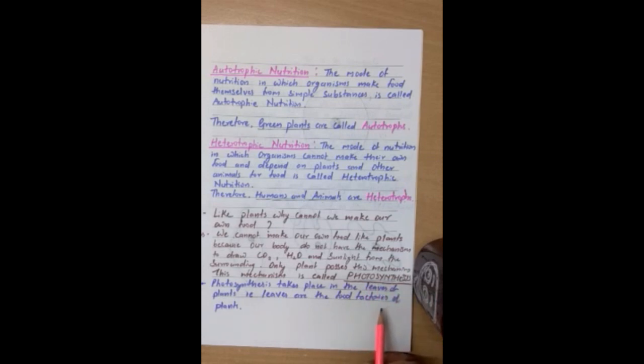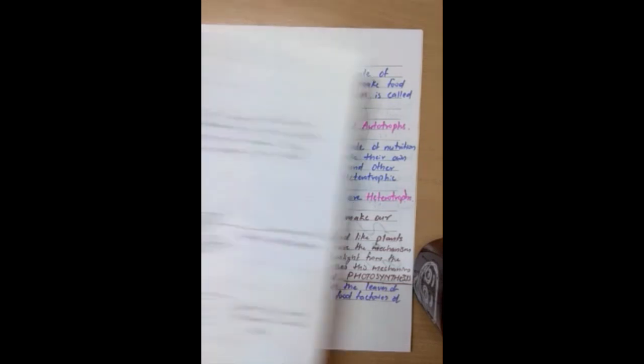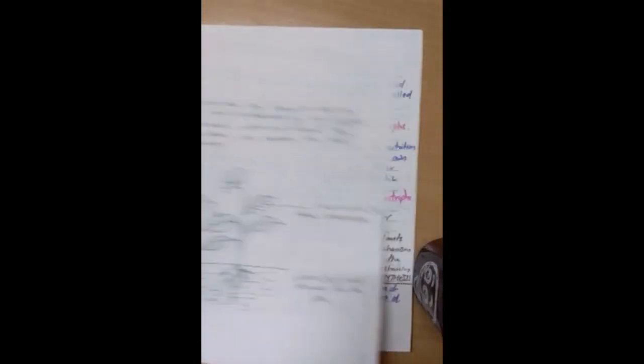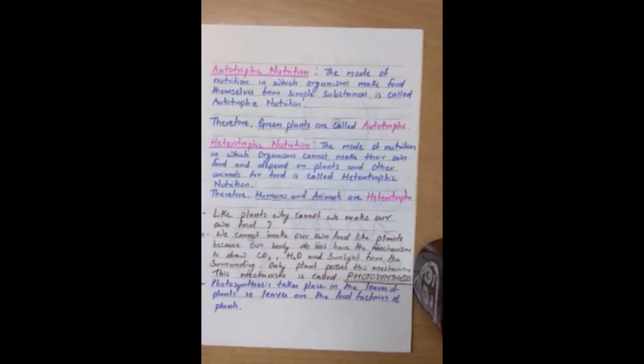Where does photosynthesis takes place? Photosynthesis takes place in the leaves of plant. That means, leaves are the food factories of plant. Inside the leaves, photosynthesis is taking place. So, that is the course for today. And in the next class, I will explain photosynthesis in detail. Hope you enjoyed my video. Please keep practicing these notes at home. Take good care of yourself. See you soon. Have a good day.